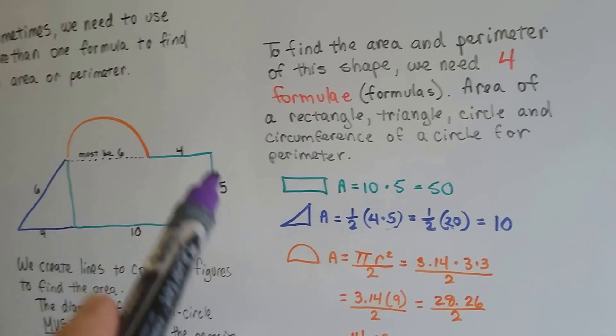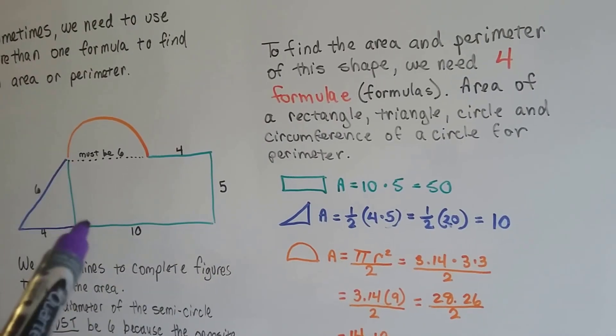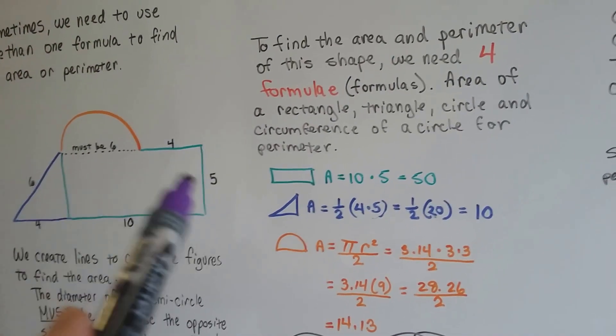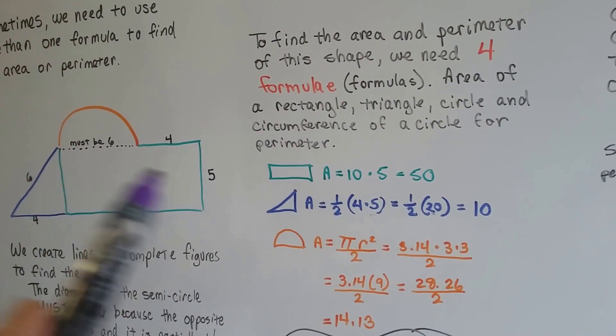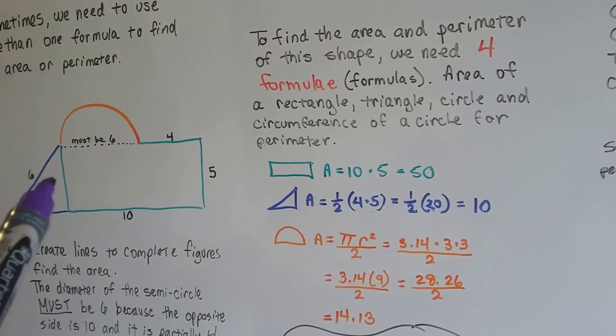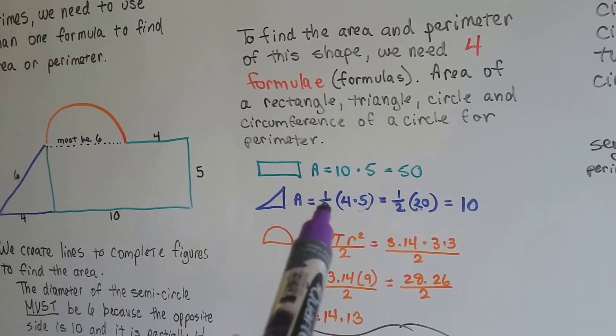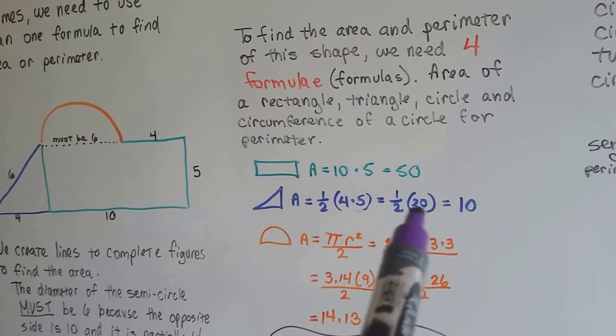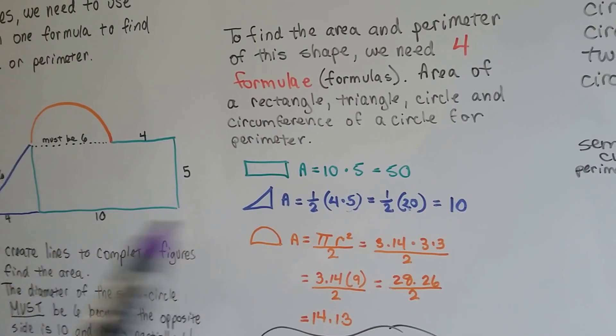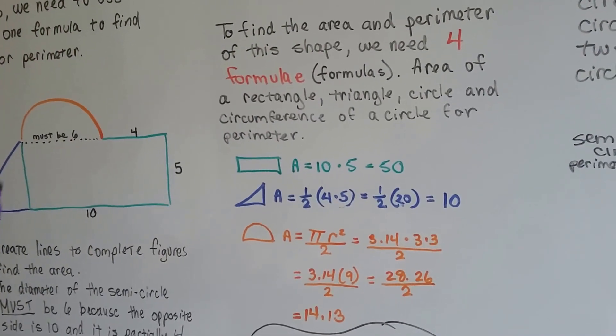For the triangle, if this is 5, then we know this is 5, because a rectangle has identical sides. They're congruent. So we know that the base is 4 and the height is 5. So we do the 4 times 5 and get 20. We multiply that by a half and we know that the area of this triangle is 10.